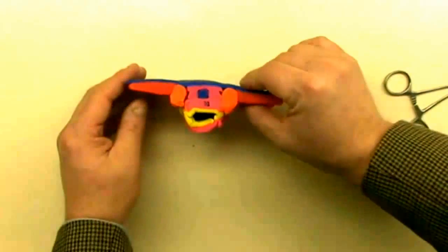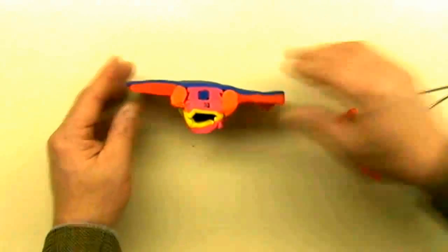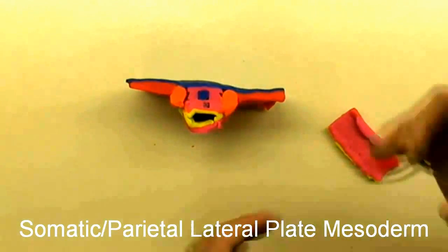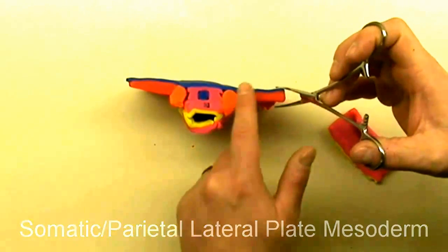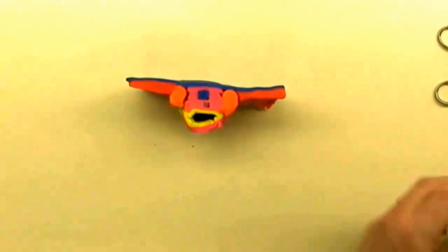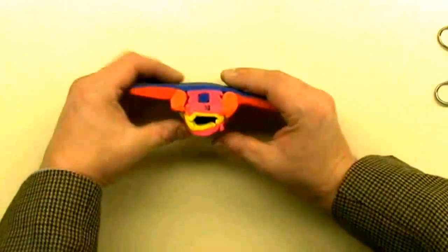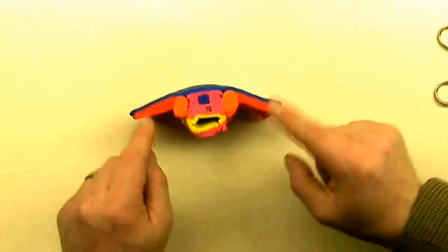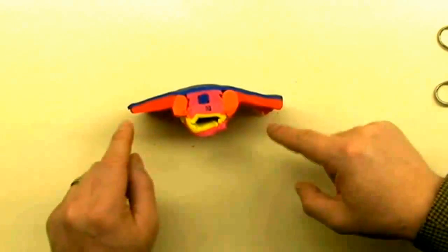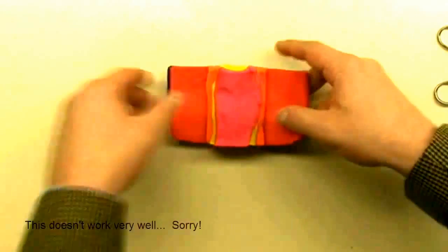We're left with the gut tube hanging out ventral to the notochord. Now the same process happens with the layer in contact with the ectoderm. This layer is the somatic or parietal lateral plate mesoderm. It will fold anteriorly like the visceral layer, but as it does, it gets longer and wraps all the way around, surrounding not only the gut tube but making a cavity within the body.